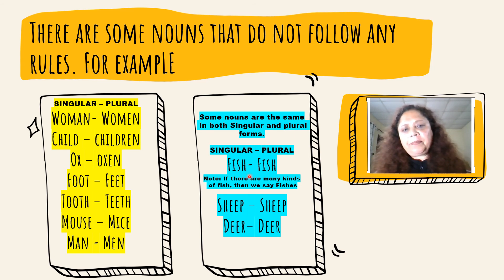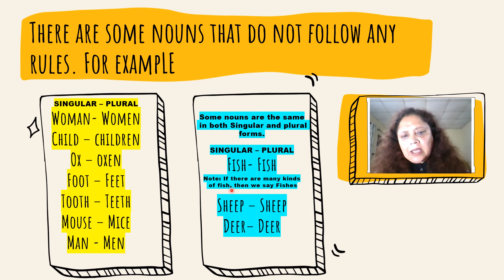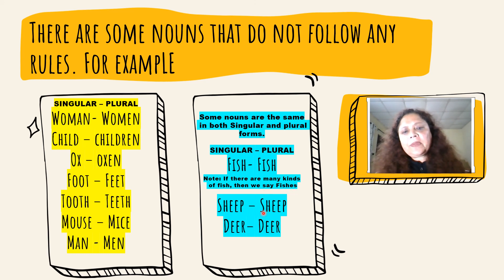For example: fish, fish. If there are many kinds of fish, then we say fishes. Sheep, sheep. Deer, deer.